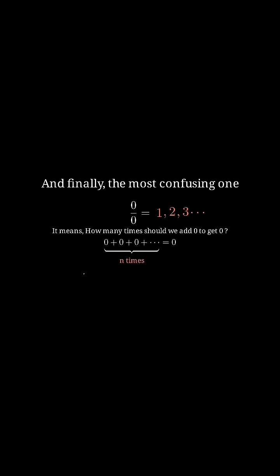And finally, the most confusing one, 0 by 0. It means how many times should we add 0 to get 0? Maybe one time. 2 times? 3 times. So there can be countless answers. Mathematically, this is called indeterminate. Thus, 0 by 0 equals indeterminate.